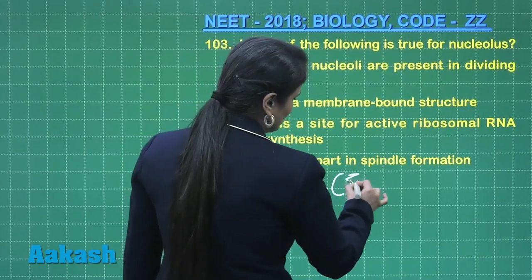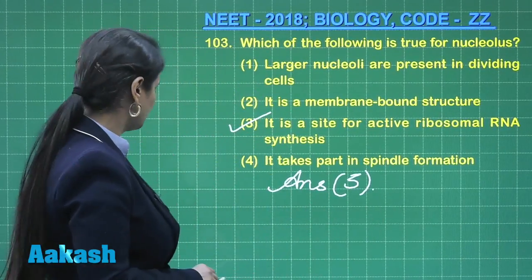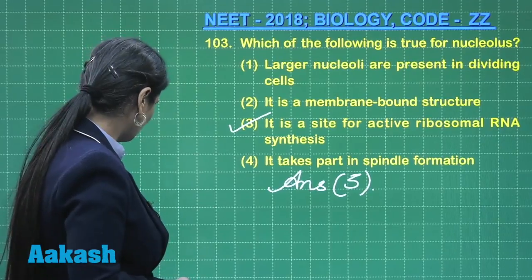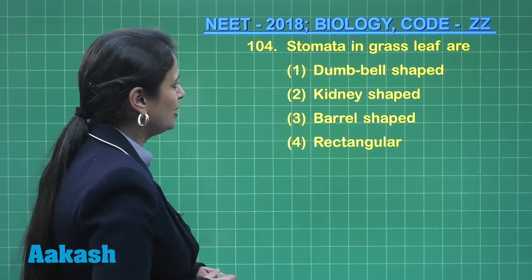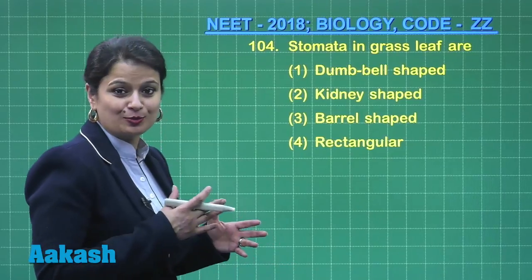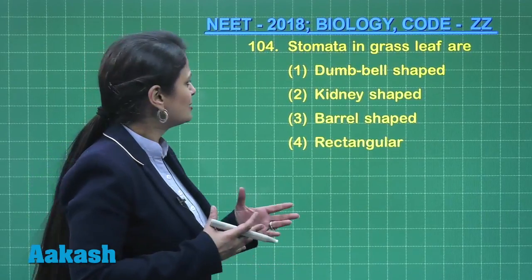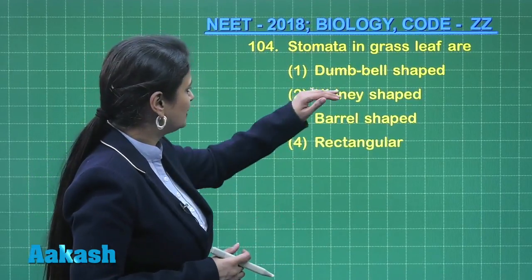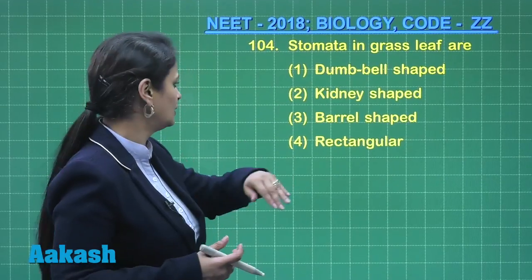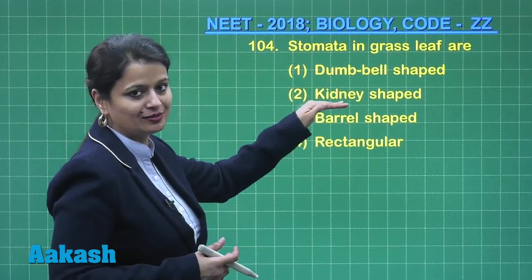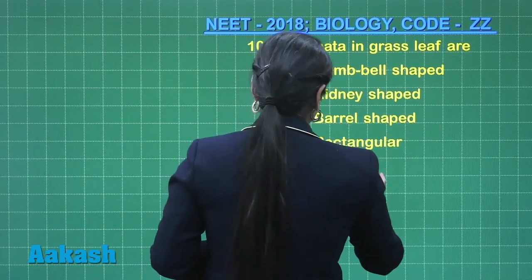That's why you call the nucleolus a ribosomal factory. Moving to question number 104: stomata in grass leaf. In the case of stomata in grasses, which are monocots, the guard cells are dumbbell-shaped. But in dicots, guard cells are bean or kidney-shaped. So the right answer for this question is option number one.